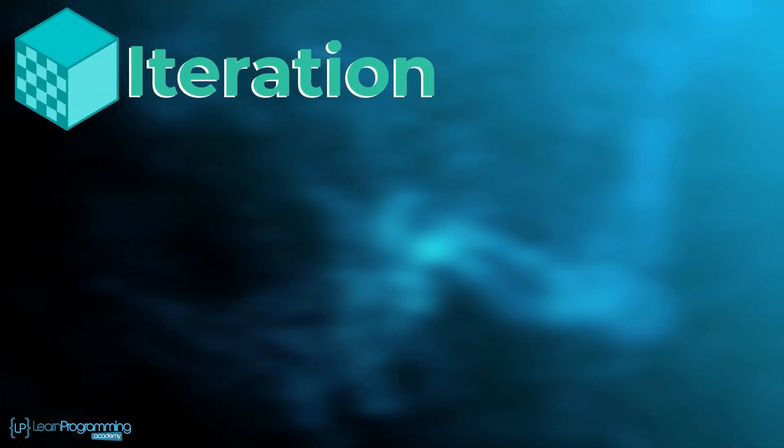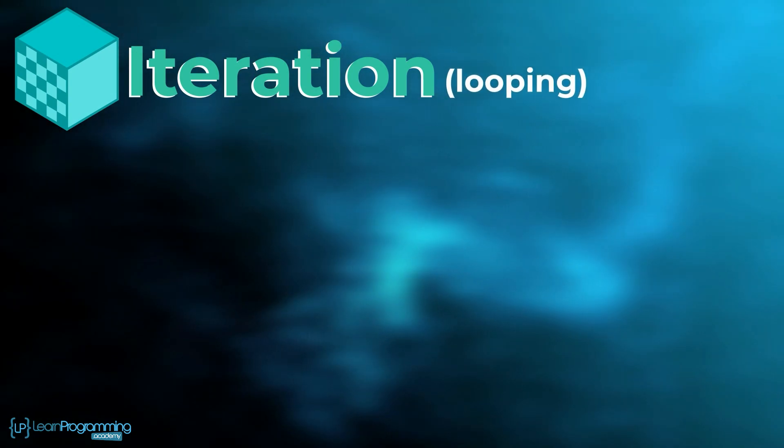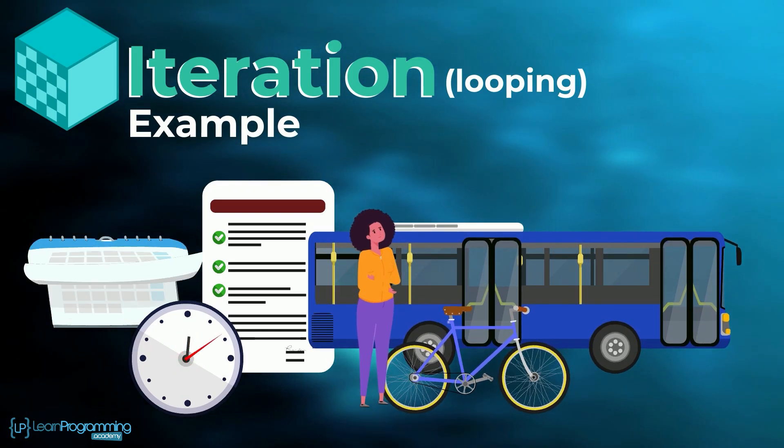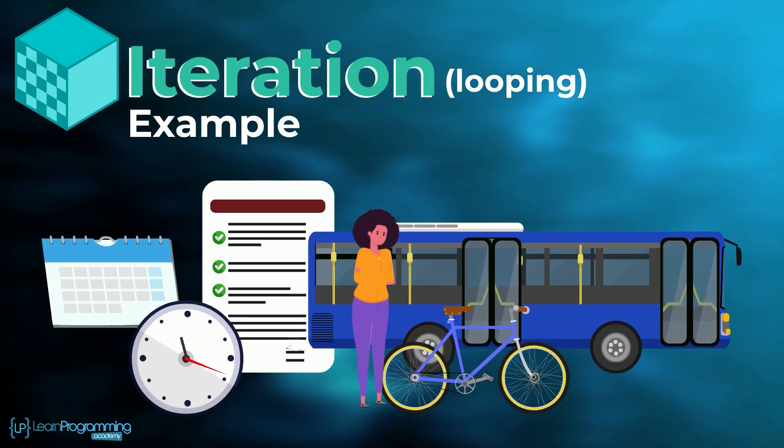The third building block, iteration, also known as looping. So an iteration or what we call looping might be you repeating the same sequence and or selection activities for several days in a row.